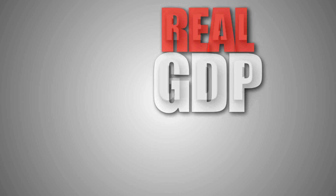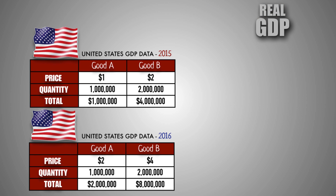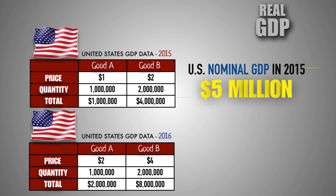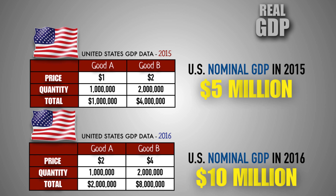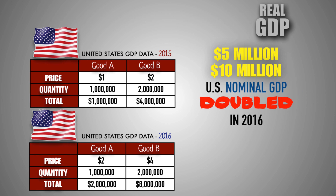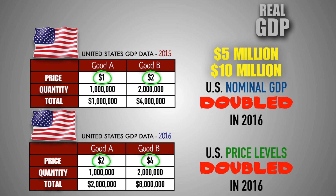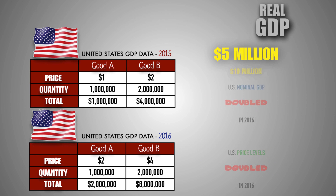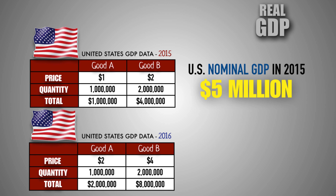For example, when using price level and domestic output for the United States in 2015, the U.S. nominal GDP in 2015 is $5 million. When using price level and domestic output for 2016, the United States nominal GDP in 2016 is $10 million. Nominally, it appears that the United States has doubled its GDP between 2015 and 2016. However, we can also see that price levels doubled between those two years. In order to determine whether or not the United States truly experienced economic growth in 2016, we need to use a constant dollar value and adjust for inflation that has occurred between the two years.